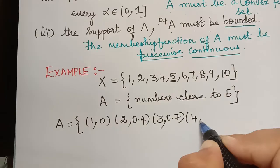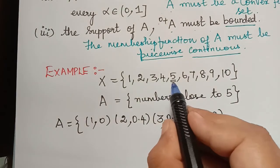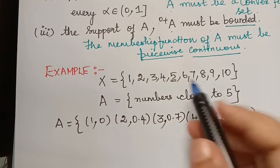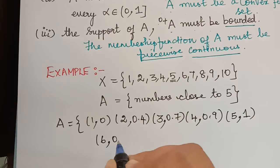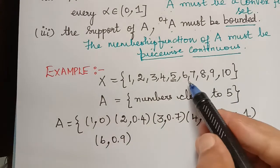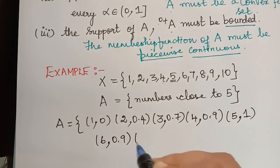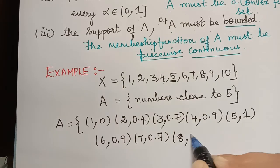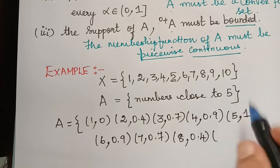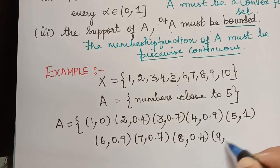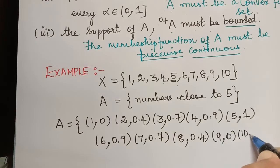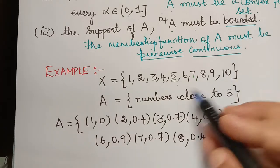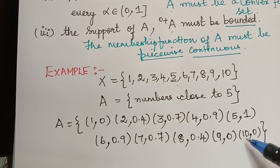Let me give the membership value for 3 as 0.7 because it is more closer than 2 to 5. For 4, I will give 0.9 because it is very close to 5, and for 5 the membership grade will definitely be 1. For 6 the membership grade is 0.9, for 7 it is 0.7, for 8 it is 0.4, for 9 it is 0, and for 10 it is also 0.